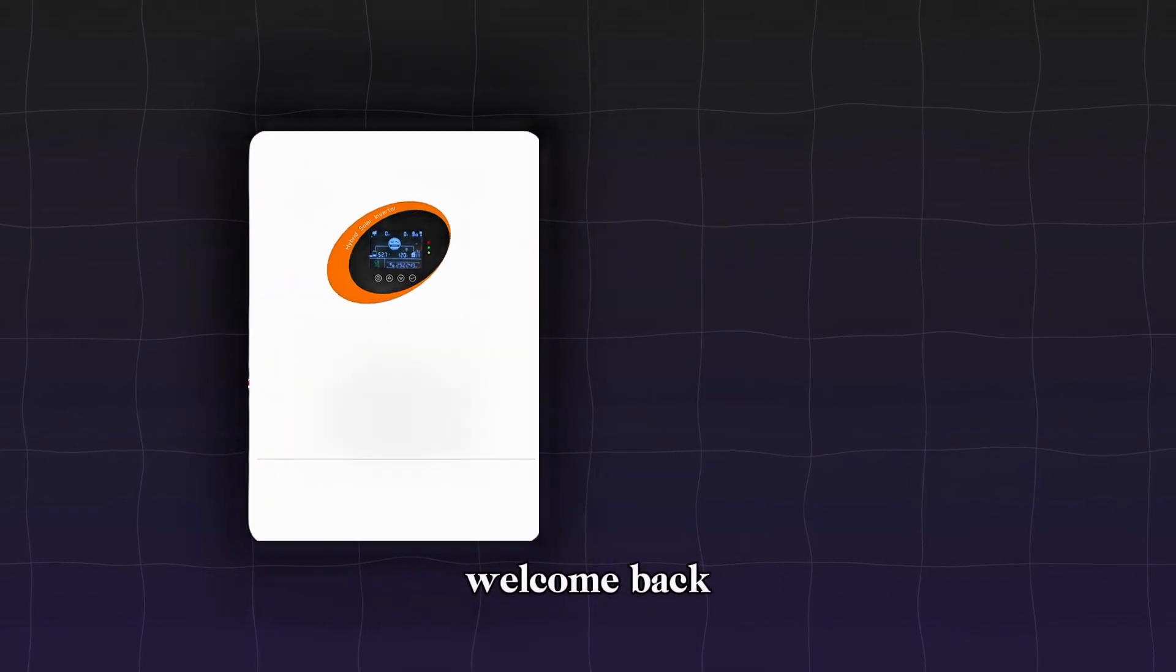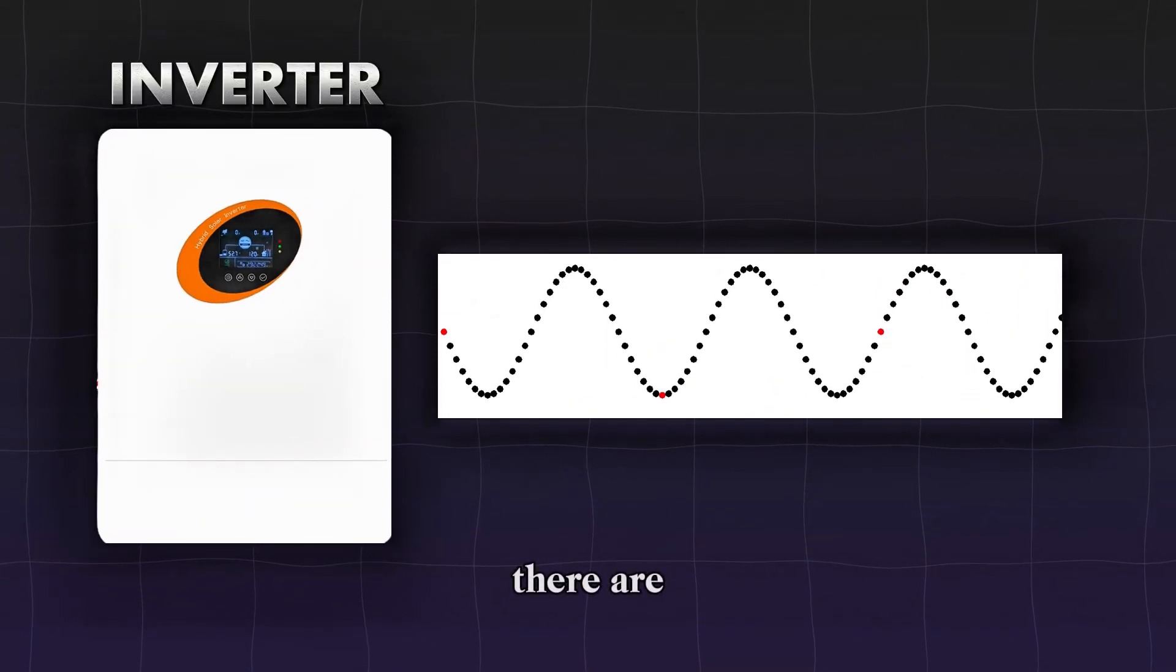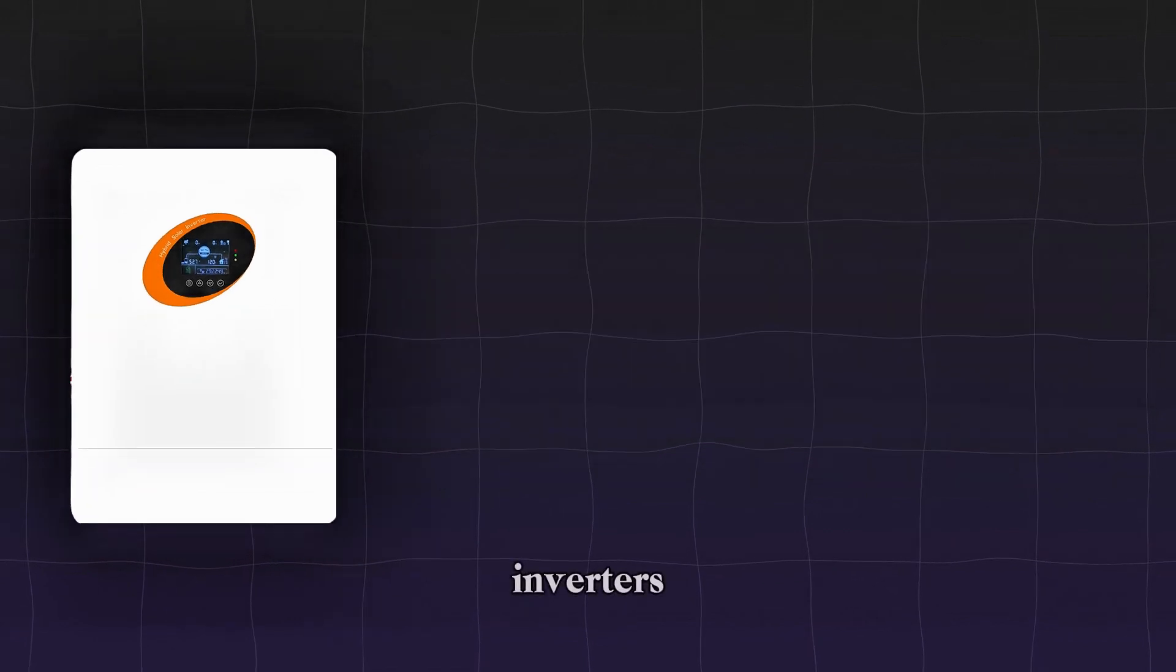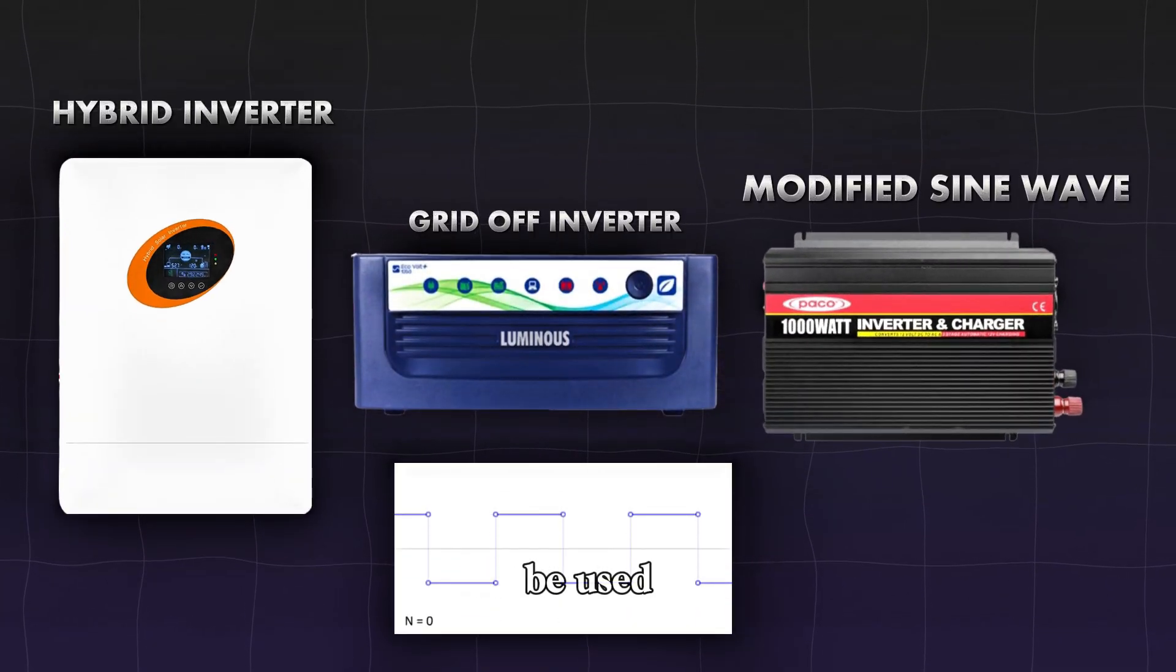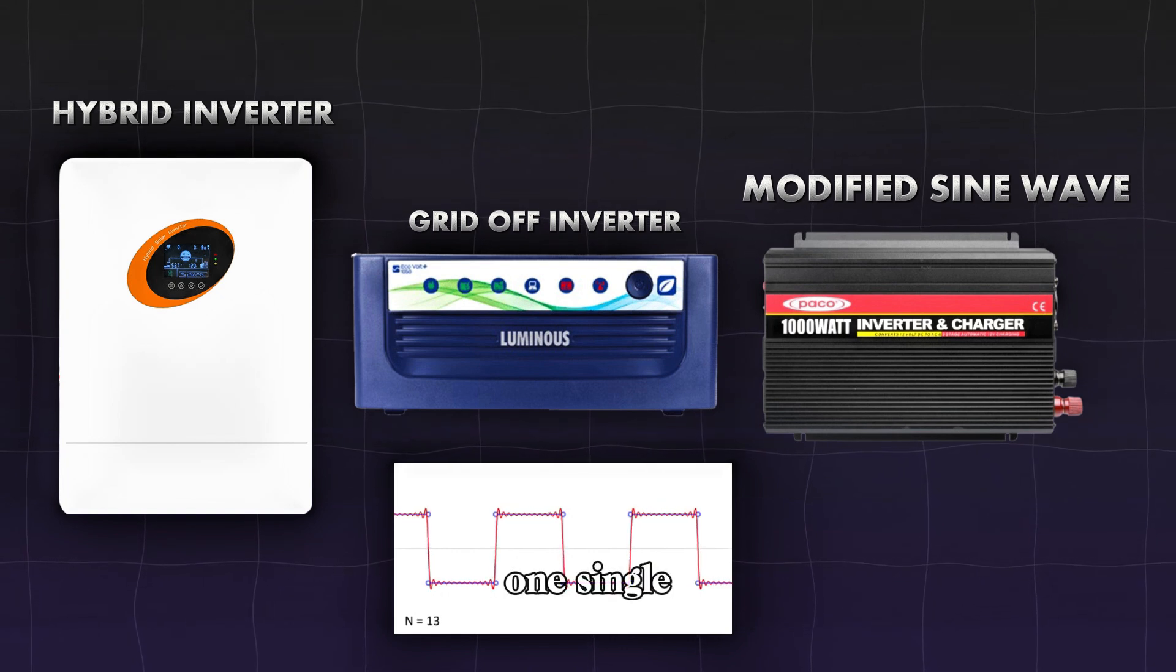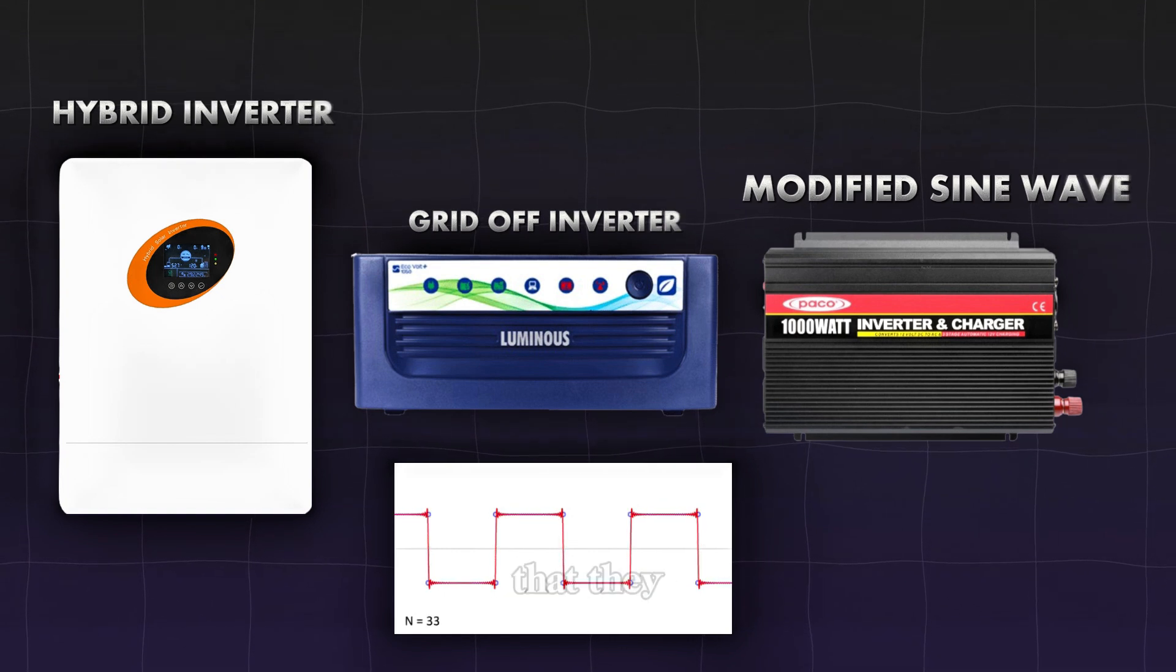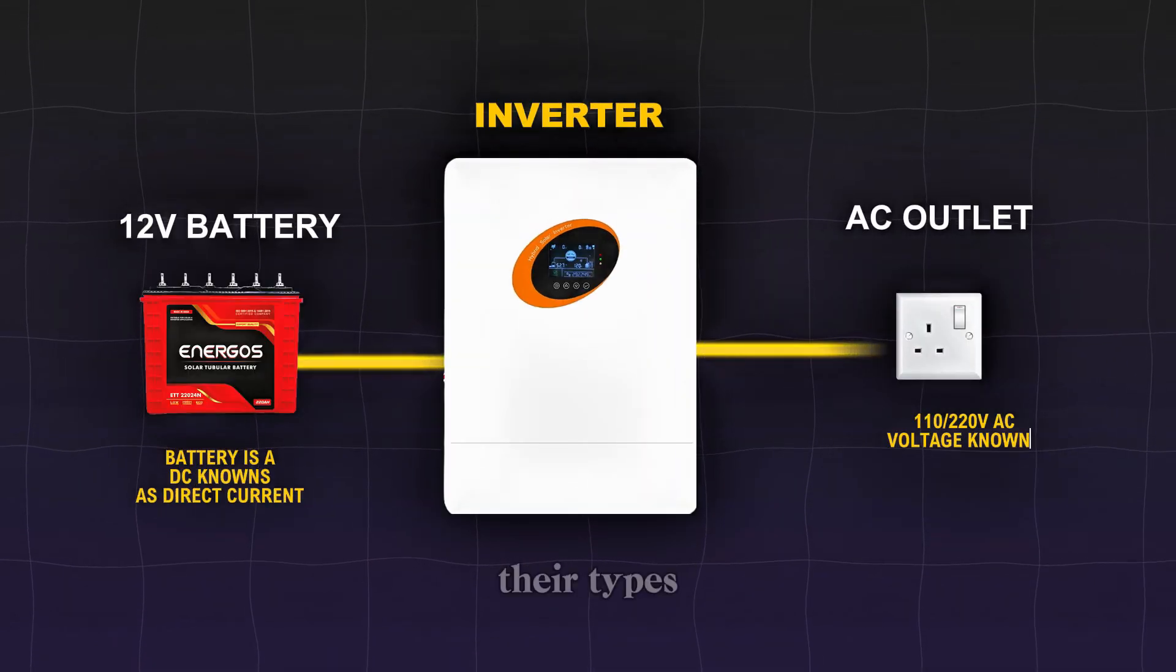You are welcome back. When we talk about how inverters work, you should keep in mind that there are various and different types of inverters based on their output characteristics and where they can be used. But all these types of inverters work on one single principle, which is that they all convert DC voltage to AC voltage regardless of their types.